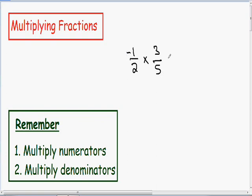Now we can multiply these fractions right away. Once again we multiply our numerators together. So in our numerator we're going to multiply our negative 1 and our 3. And in our denominator we're going to multiply our 2 and our 5.